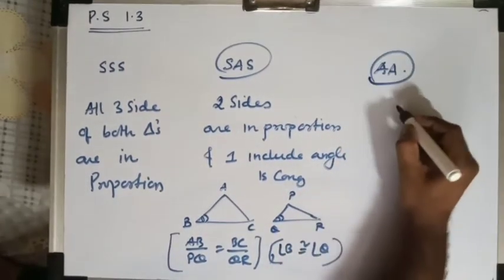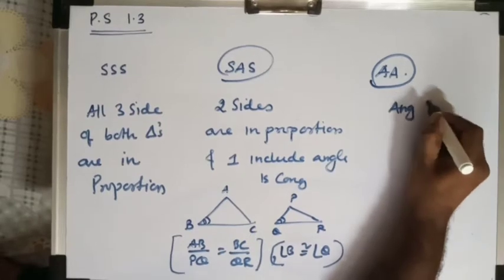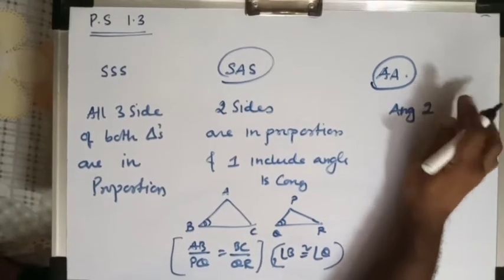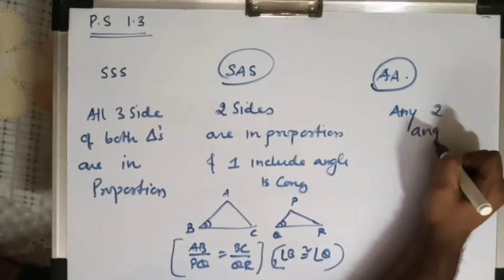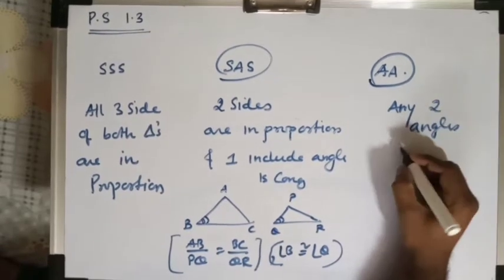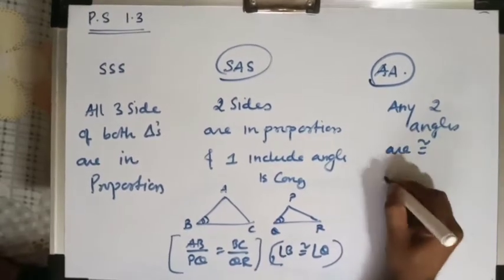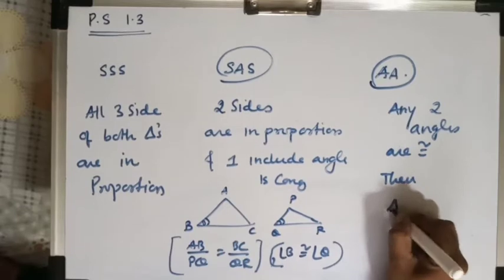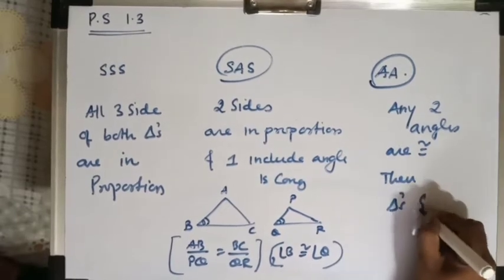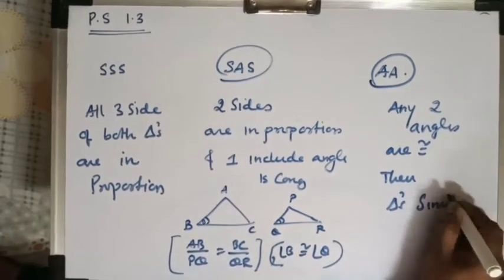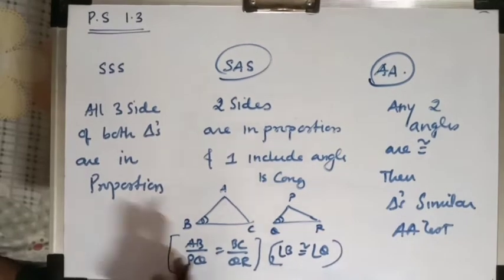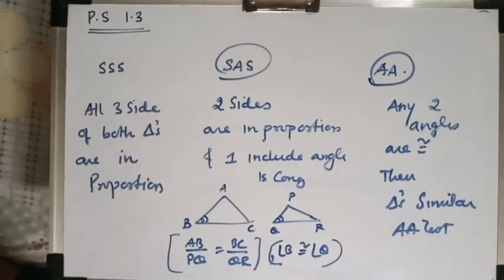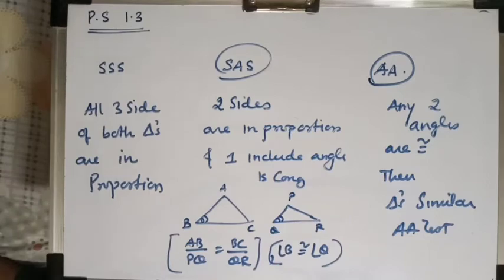In the AA test, if any two angles are congruent, then the triangles are said to be similar by the AA test of similarity. This you have already learnt in standard nine, which is why it has not been explained in detail.